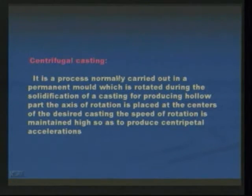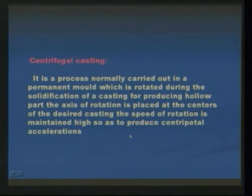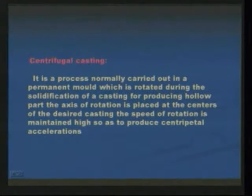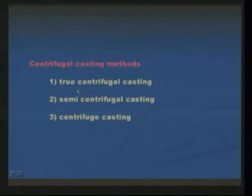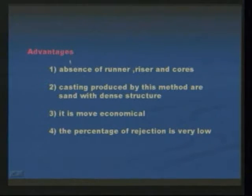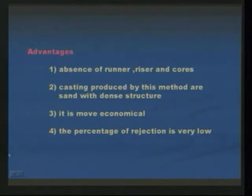Centrifugal casting is carried out in a permanent mold which is rotated during the solidification process, producing centrifugal accelerations. The speed of rotation is maintained high. Centrifugal casting methods are of three types: true centrifugal casting, semi-centrifugal casting, and centrifuge casting. Advantages include: absence of runners and risers, castings produced are dense in structure, it is more economical, and the percentage of rejection is very low.